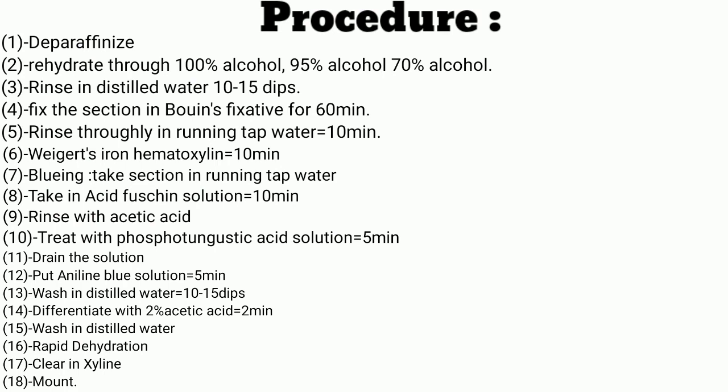Procedure of Masson's Trichrome stain. First, de-paraffinize the slide by placing it on a slide warming table or in a hot air oven for 5-10 minutes. Second, re-hydration through 100%, 95%, and 70% alcohol — re-hydration is done to restore the fluid in the tissue. Third, rinse in distilled water for 10-15 dips.